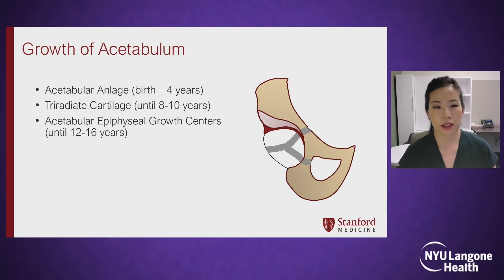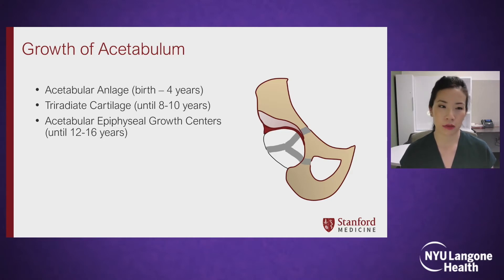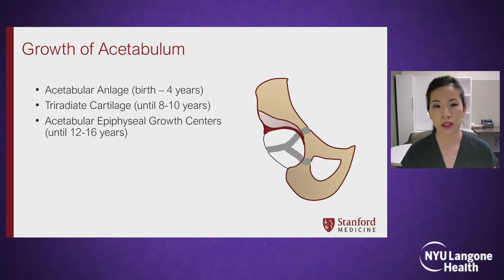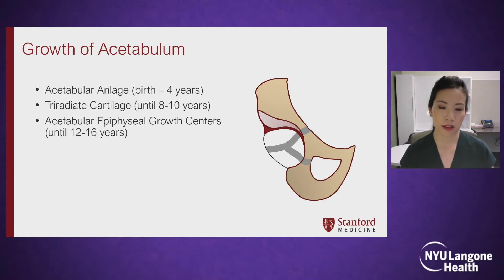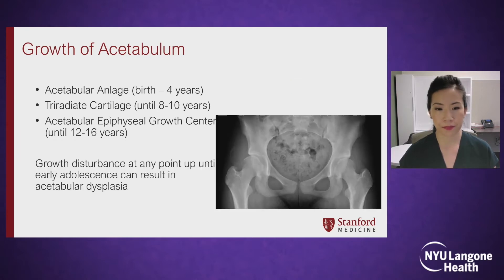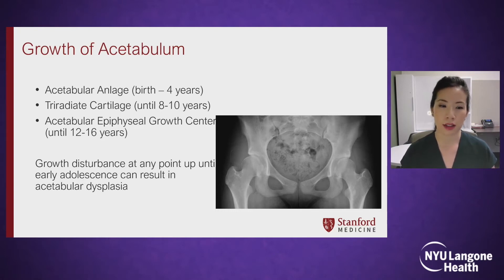As we talked about earlier today, the acetabulum grows from three separate growth centers, with the acetabular anlage early in life, followed by the triradiate cartilage being active to expand the width of the acetabulum until later in childhood. And then finally, the acetabular epiphyseal growth centers are active in deepening the acetabulum and establishing acetabular version into mid-adolescence. Growth disturbance at any point of any of these growth centers up until early adolescence can result in acetabular dysplasia evident at skeletal maturity.